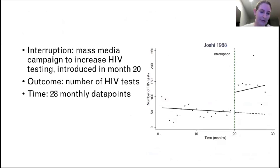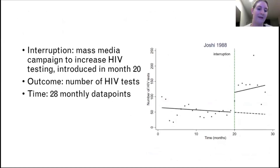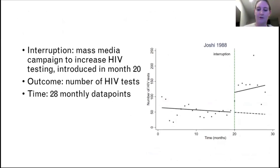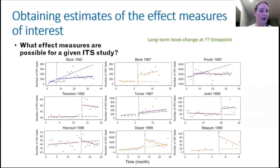Here's another example of an ITS. The outcome of interest is the number of HIV tests, measured monthly. We have 28 months of data points, and in month 20 we had an interruption — a mass media campaign with the goal of increasing HIV testing. Things like billboards, newspapers, and TV ads. Our meta-analysis has a collection of nine different studies that have all looked at similar interruptions, and we want to know what kinds of effects are possible from this collection.